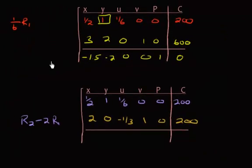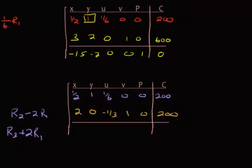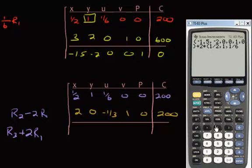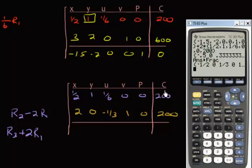Next, focus on row three — it has a negative two that needs to become zero. So take row three and add two times row one. On the calculator: {-1.5, -2, 0, 0, 1, 0} plus two times {1/2, 1, 1/6, 0, 0, 200}. Convert to fractions and put that result in for row three.